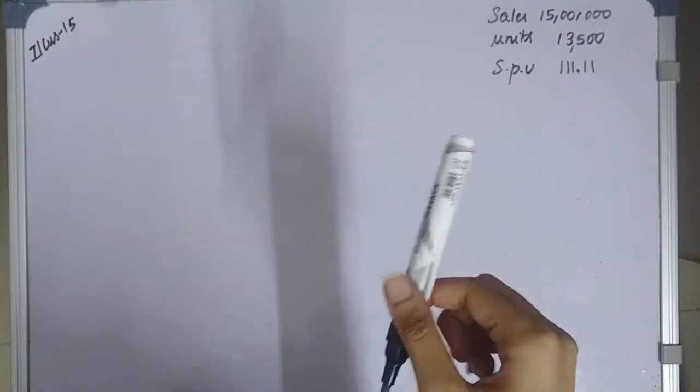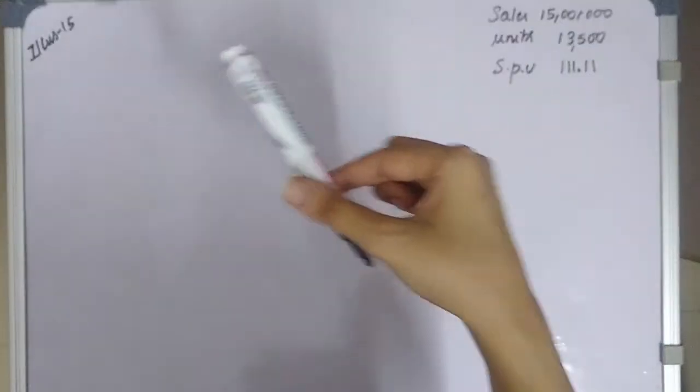We already have existing production of 13,500 units. If we increase capacity, we need to find the incremental cost per unit — that is Point A. Point B: what would you recommend for the export price for these 1,500 units, taking into account that overseas prices are much lower than indigenous prices?